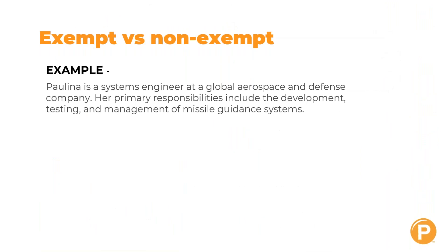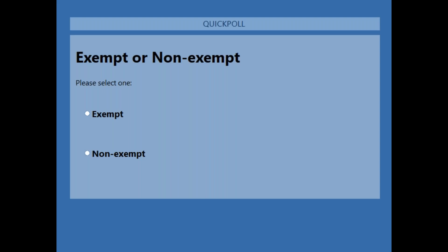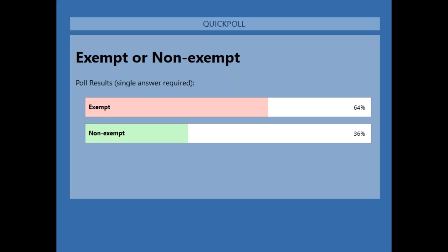Example: Paulina is a systems engineer at a global aerospace and defense company. Her primary responsibilities include development, testing, and management of missile guidance systems. She is exempt — she holds one of the qualifying job titles, and her work involves the development and management of complex computer systems.